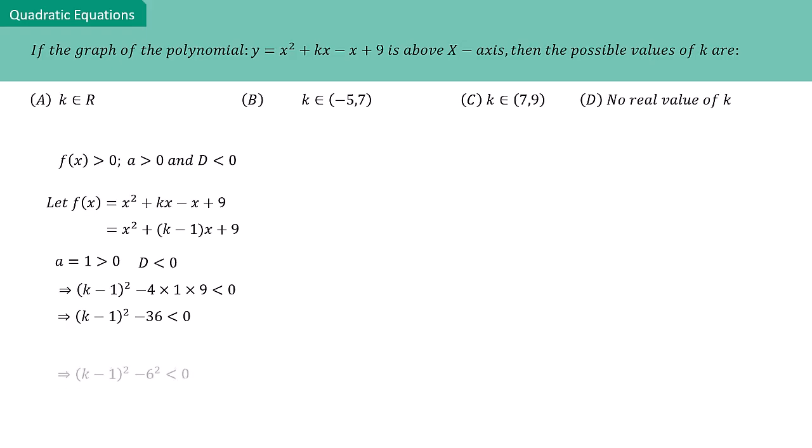Recognizing that 36 = 6², we can rewrite the left-hand side of the inequality as (k + 5)(k - 7) using the identity a² - b² = (a + b)(a - b).